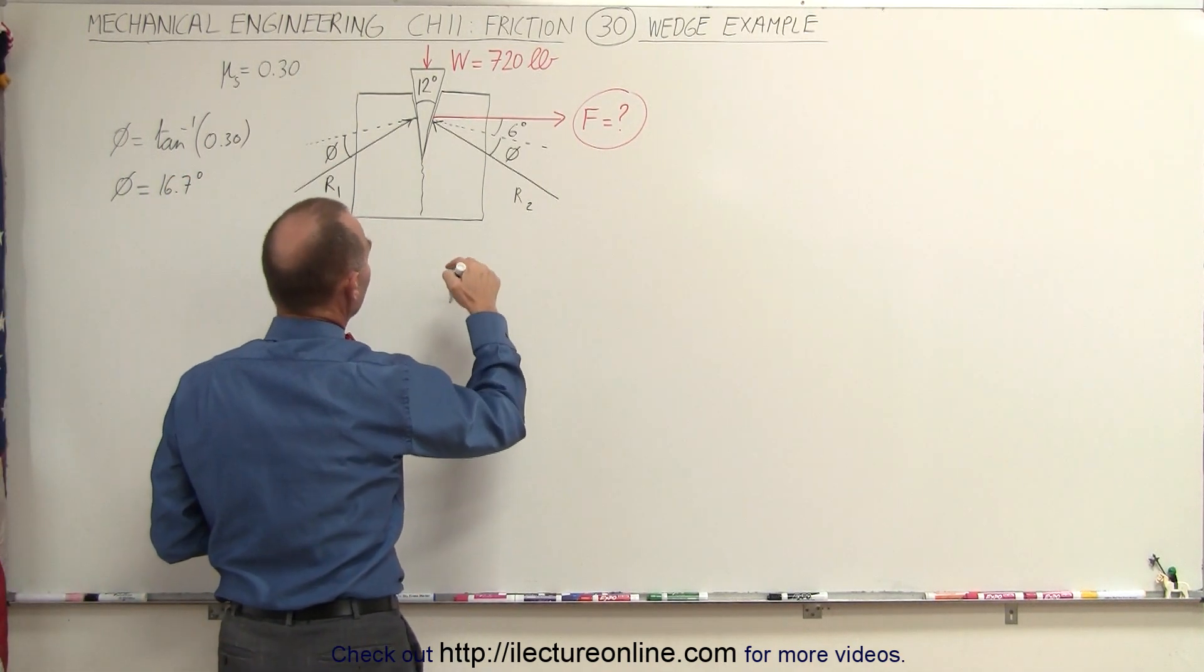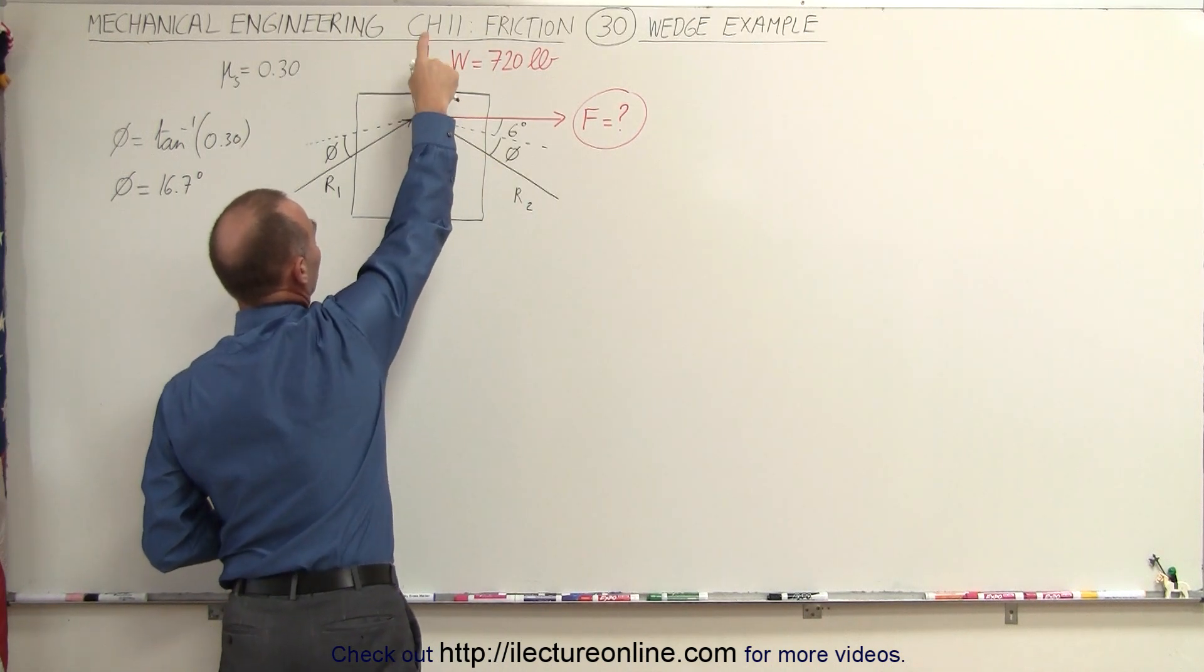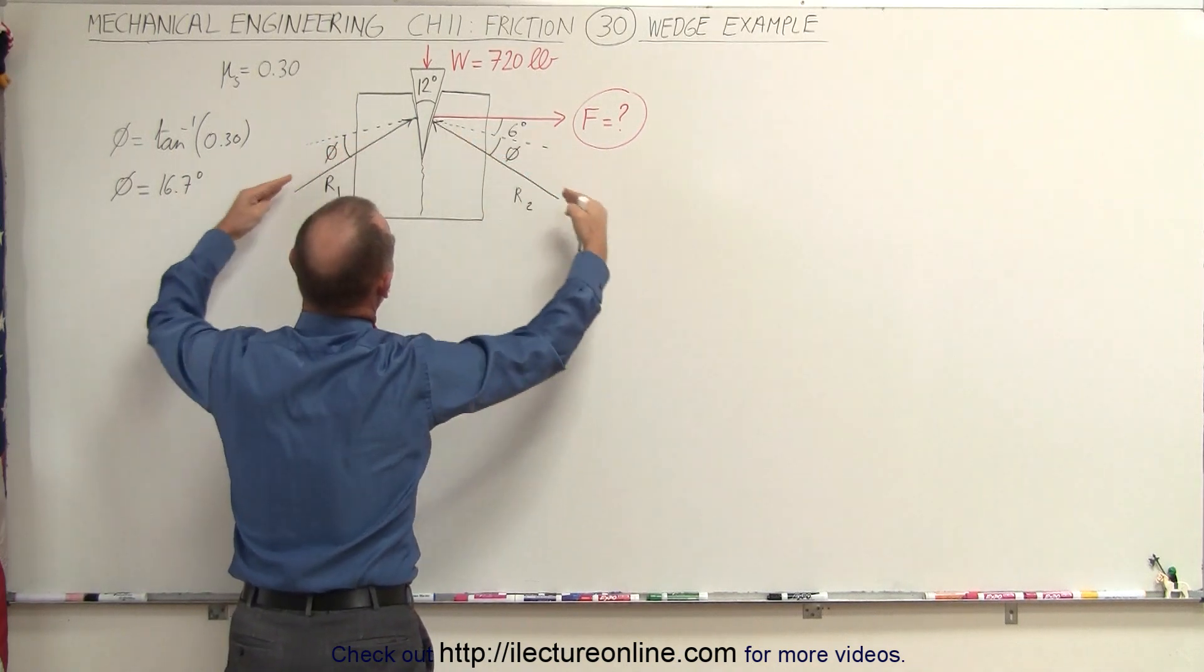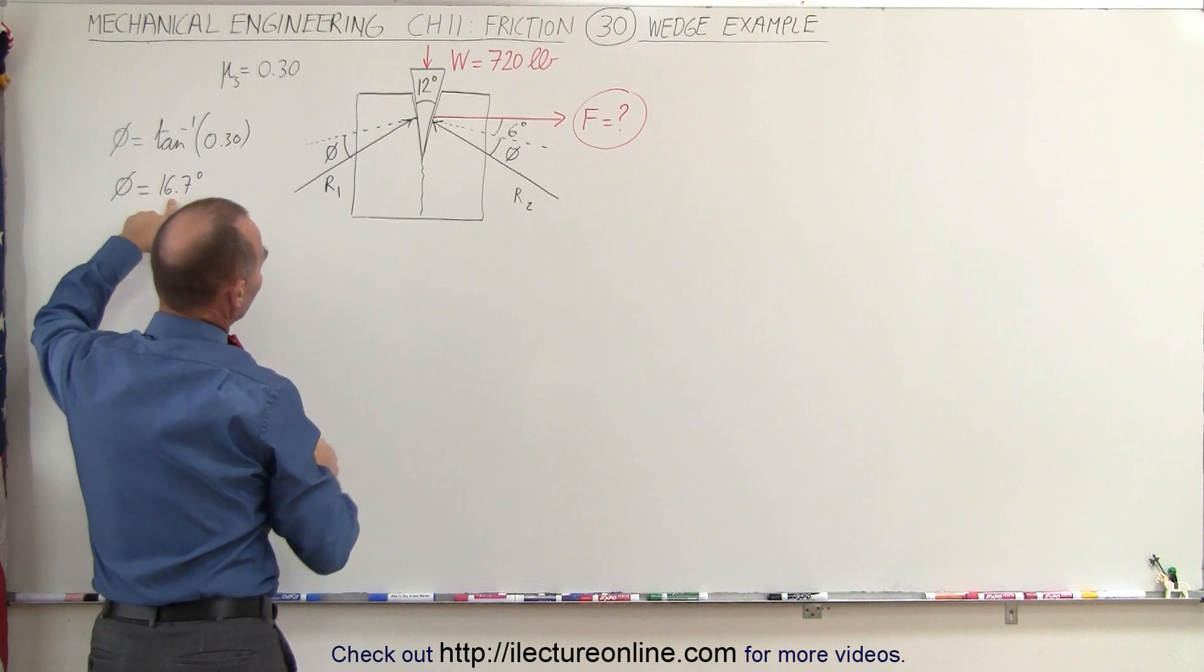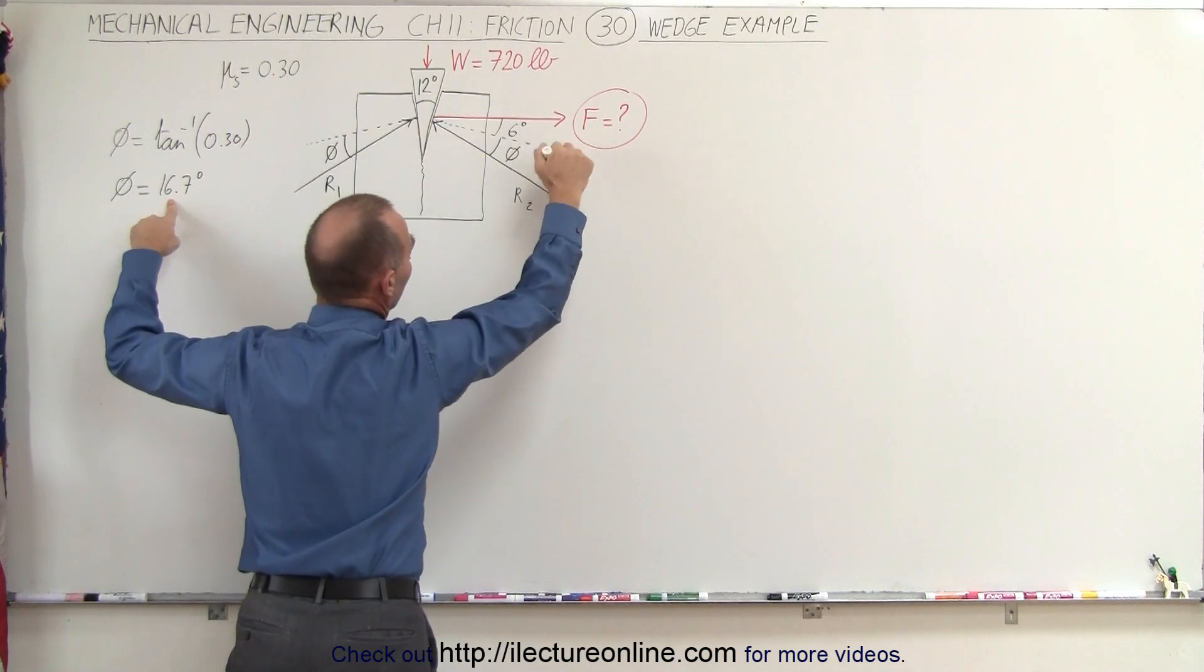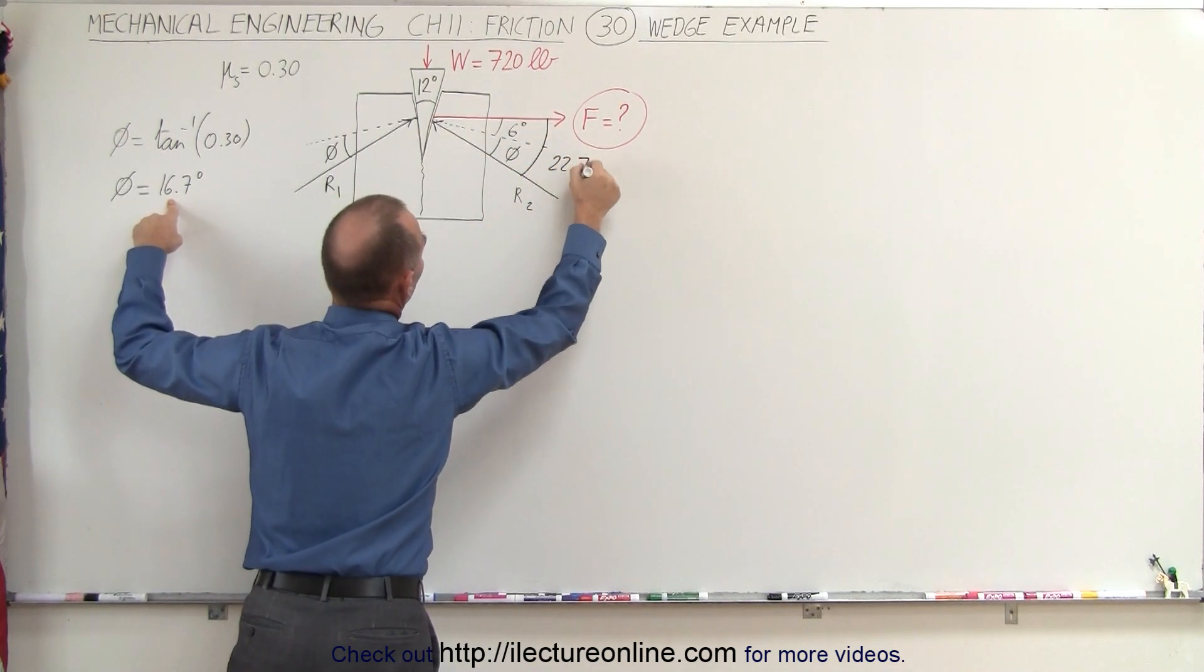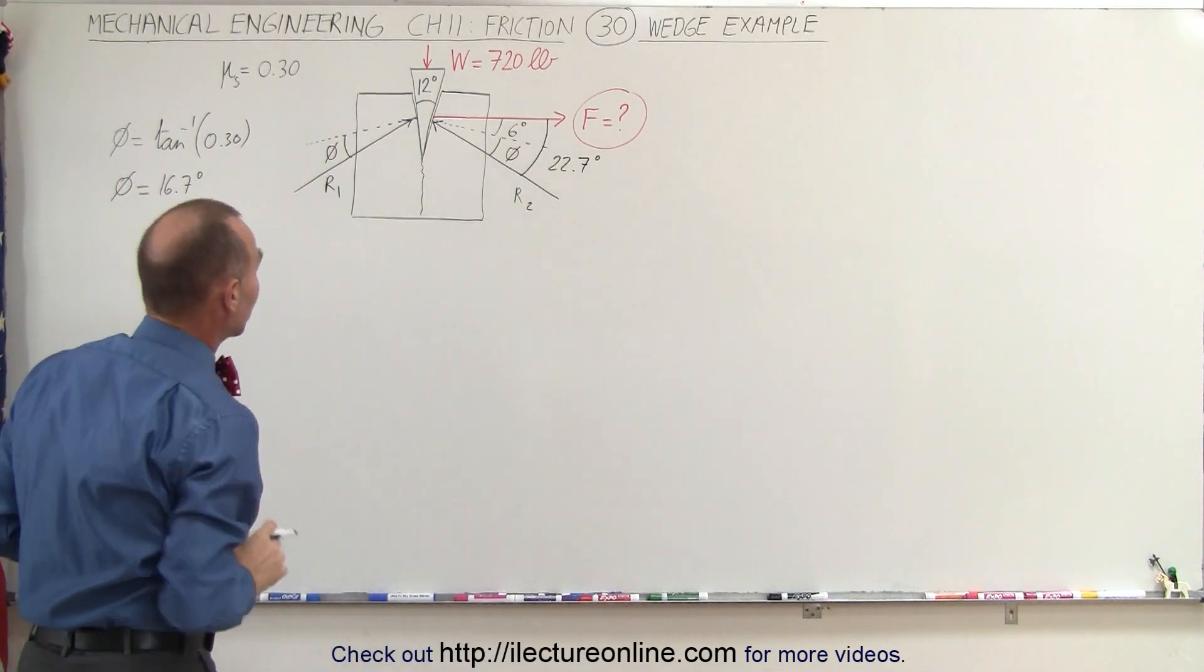When we do a summation of the forces involved, we have the 720-pound force pushing downward and the two reaction forces. If we add the 16.7 degrees to the 6 degrees, which is half of 12 degrees (the angle between the horizontal and the normal), we have an angle of 22.7 degrees.